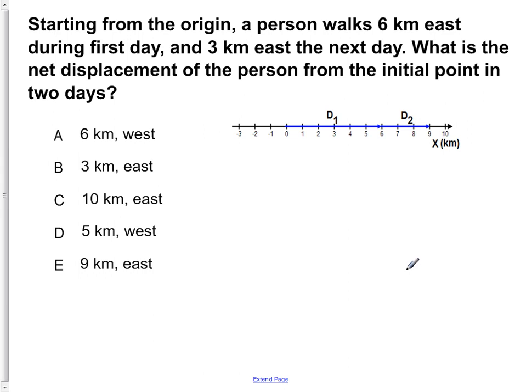Starting from the origin, a person walks six kilometers east during the first day and three kilometers east the next day. What is the net displacement of the person from the initial point in two days?